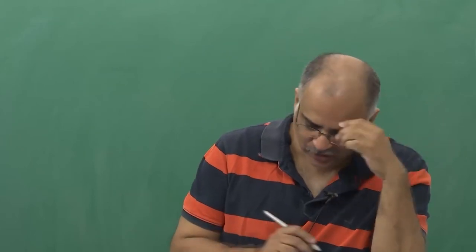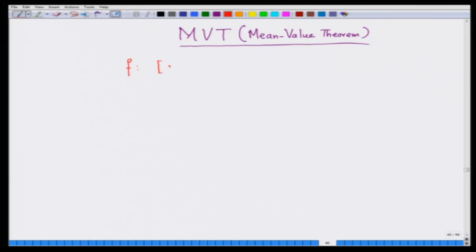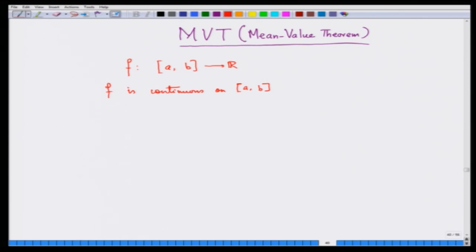What does it say? Take a function f from [a, b] to R, where [a, b] is a closed interval in R. Assume that f is continuous on [a, b] — continuous on [a, b] means at the point a we are talking about right continuity, and at the point b we are talking about left continuity, because we do not know anything about the function outside the interval a and b. Then assume that f', the derivative, exists on the open interval (a, b).